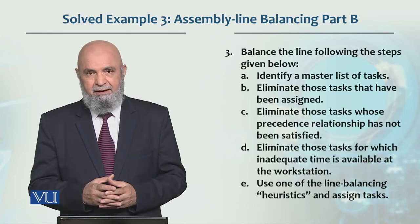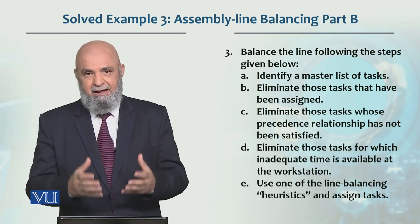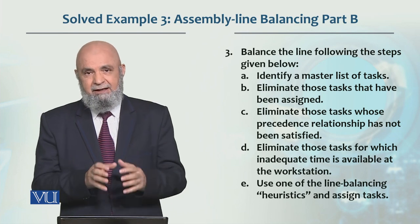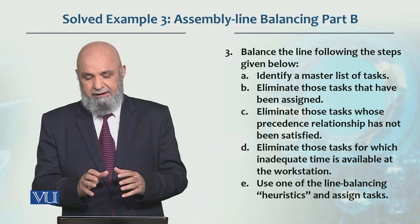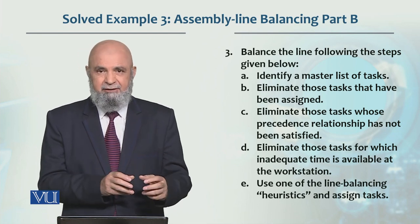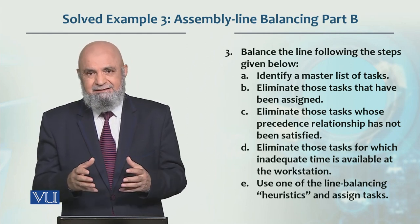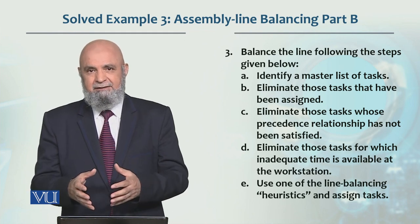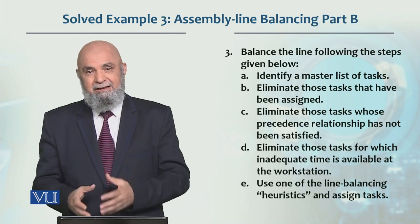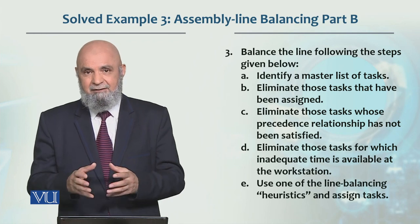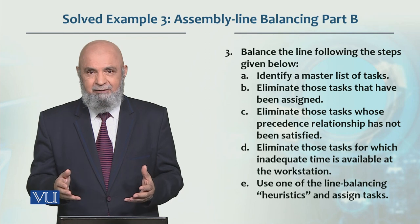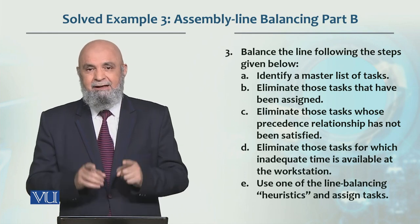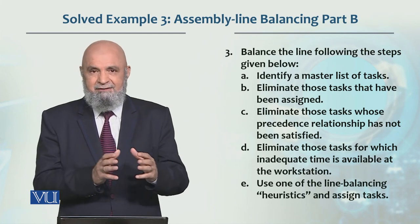اس کے بعد ہم نے line balance کرنی ہے۔ پہلے master list identify کریں — جو کہ a to i tasks ہیں۔ جب assignment کا وقت آئے تو جو tasks assign ہو چکے ہیں انہیں list سے eliminate کر دیں۔ مثلاً a assign ہو چکا ہے تو a کو eliminate کریں۔ اس کے بعد دیکھیں کون سے tasks available ہیں — اس case میں b اور e available ہیں، باقی کوئی نہیں کیونکہ precedence relationship کی وجہ سے b اور e میں سے ایک complete ہوئے بغیر کوئی اور task assign نہیں ہو سکتا۔